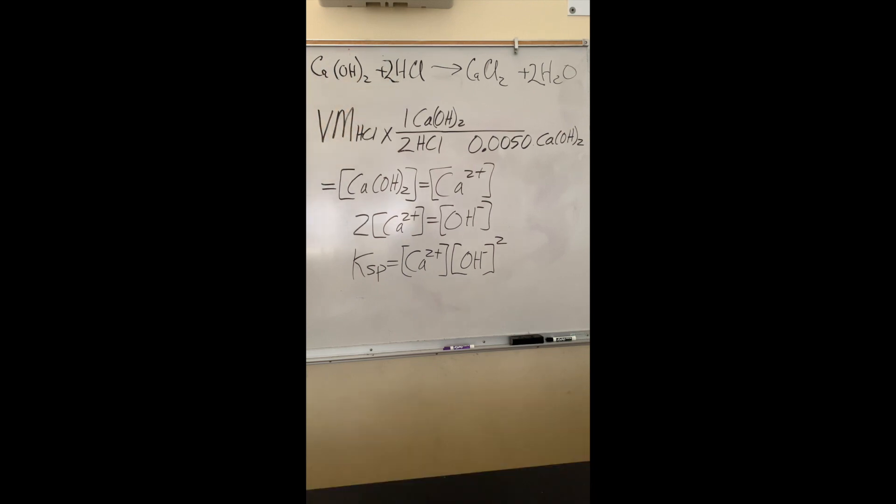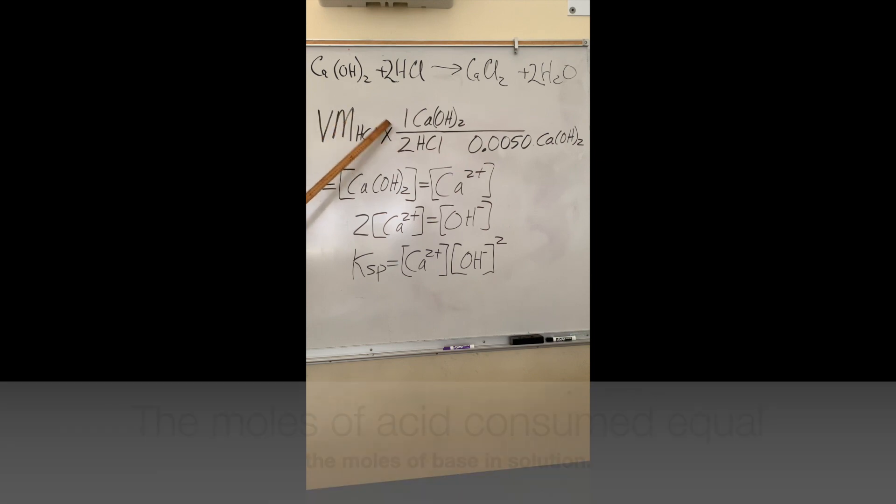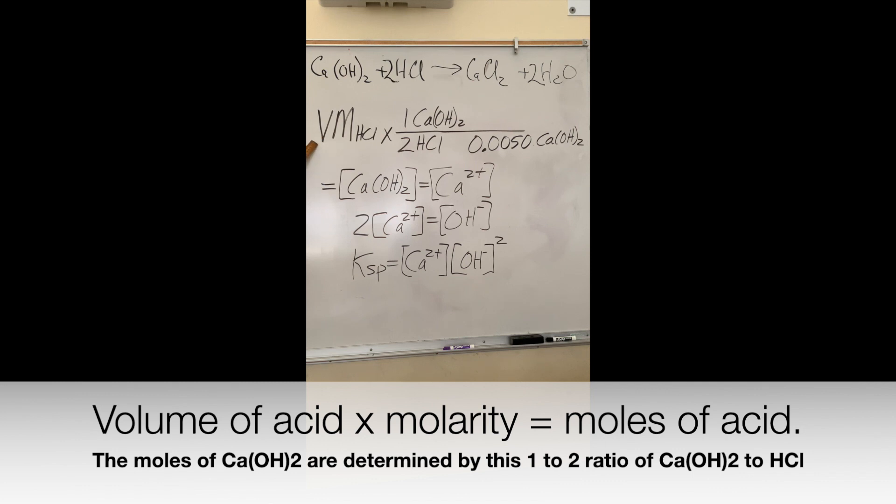To determine the number of moles of acid that are consumed, we know that the number of moles of acid at equilibrium or at the endpoint is equal to the number of moles of base. The volume of the acid times the molarity of the acid gives us moles.